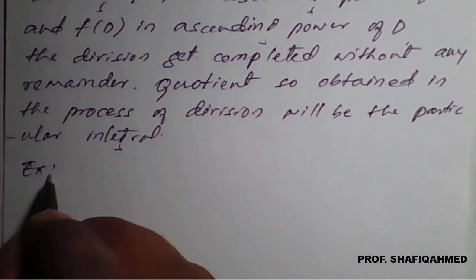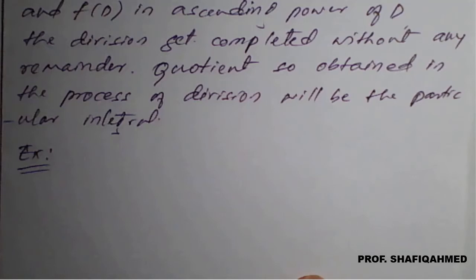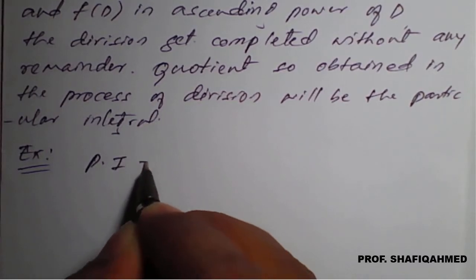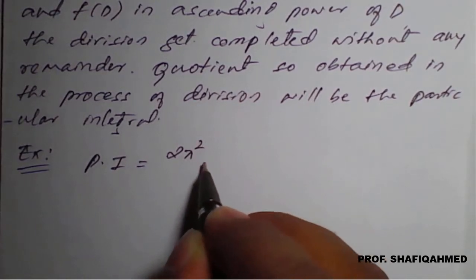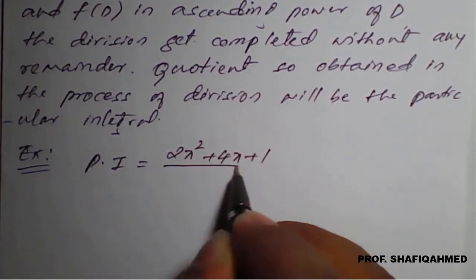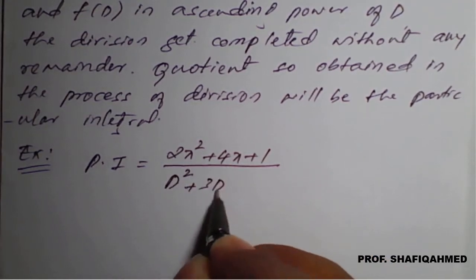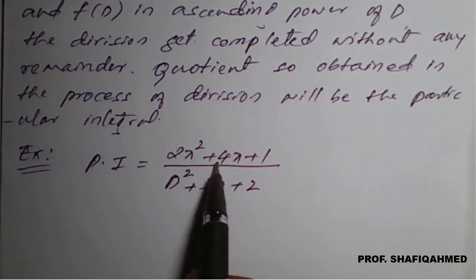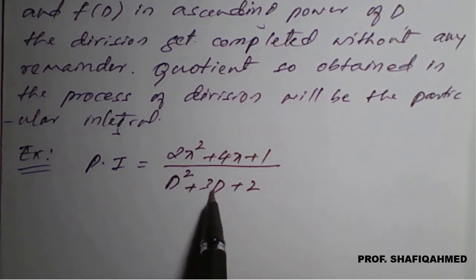We will take one illustrative example so that we can understand how to find this kind of type. PI is equal to φ(x) upon f(D), that is (2x² + 4x + 1) divided by (D² + 3D + 2). So the right-hand side is a polynomial 2x² + 4x + 1 divided by f(D), that is D² + 3D + 2.